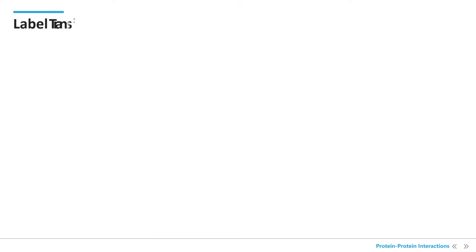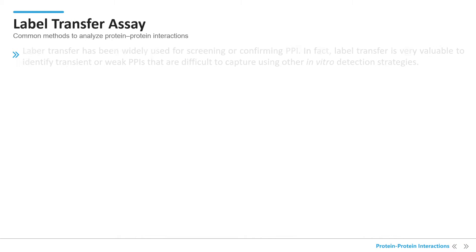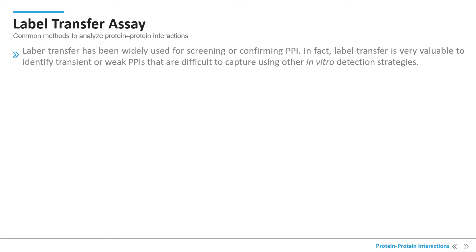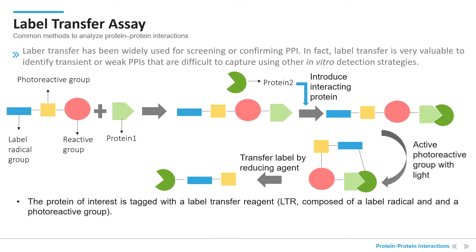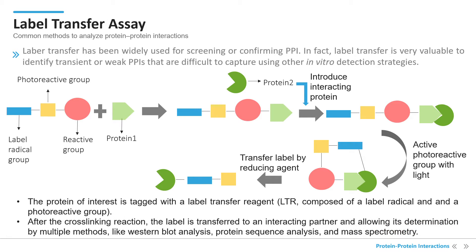Label transfer has been widely used for screening or confirming protein-protein interactions. In fact, label transfer is very valuable to identify transient or weak protein-protein interactions that are difficult to capture using other in vitro detection strategies. In this method, the protein of interest is tagged with a label transfer reagent, composed of a label radical and a photoreactive group. After the cross-linking reaction, the label is transferred to an interacting partner, allowing its determination by multiple methods, like western blot analysis, protein sequence analysis, and mass spectrometry.